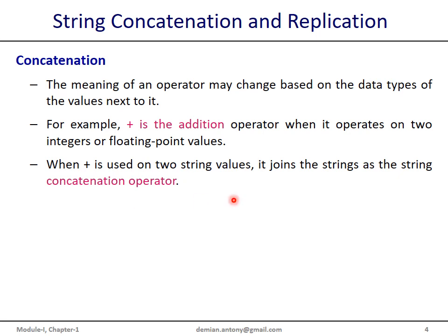String concatenation. The meaning of an operator may change based on the data types of operands present in an expression containing arithmetic operators. For example, the plus is the addition operator which operates on two integers or two floating point operands. When plus is used with string values, it joins the strings as a string concatenation operator.